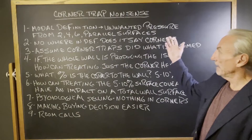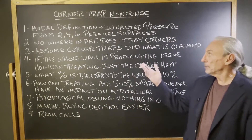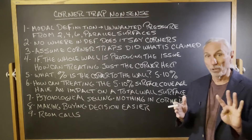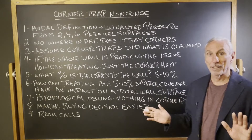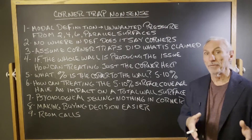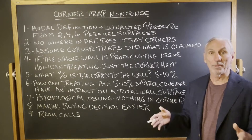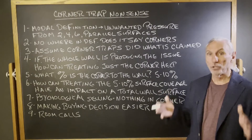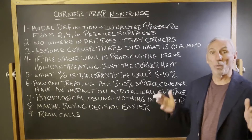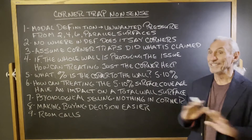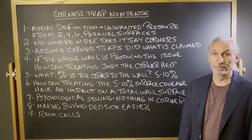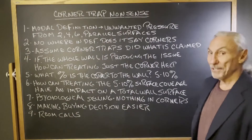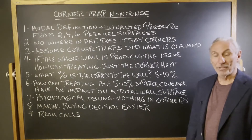A modal definition is unwanted pressure between two, four, or six parallel surfaces. Two parallel surfaces: axial modes. Four: tangential. Six: oblique. They all have their individual weights in terms of audibility and distortion, but it doesn't change the definition. It's two parallel wall surfaces, not two parallel corners. It's just physics. Nowhere in the definition does it mention corners.